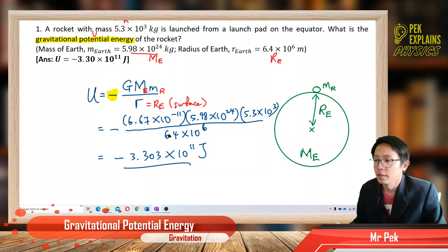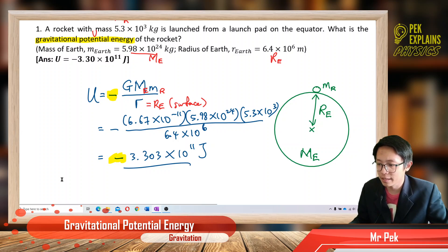Joule is the unit. So remember, for gravitational potential energy, you must maintain the negative sign. This negative sign is very important. See you in the next question.